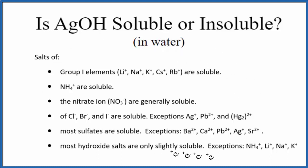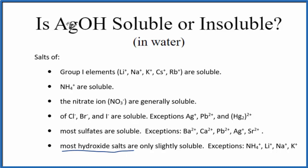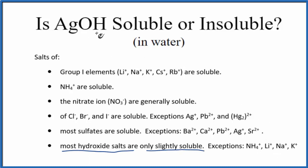First, we could have memorized the solubility rules. We come down here and we see most hydroxide salts — we have an OH bonded to a metal, this is our hydroxide group with the metal, that makes this an ionic compound, a hydroxide salt — they're only slightly soluble with a few exceptions. So according to these rules, silver hydroxide is slightly soluble in water; just a little bit of it will dissolve.